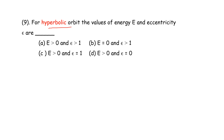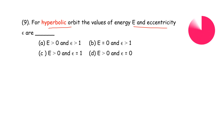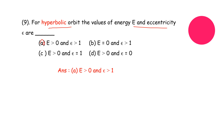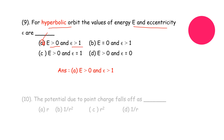For a hyperbolic orbit, what are the values of energy E and eccentricity epsilon? The correct answer is option A: E greater than zero and epsilon greater than one.